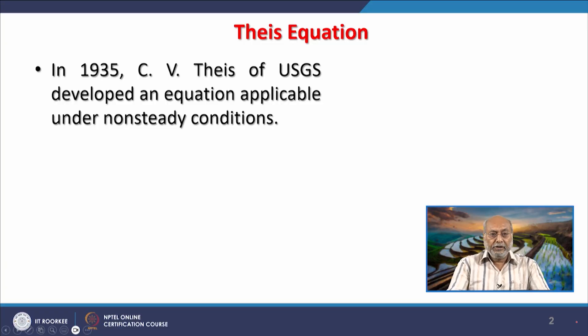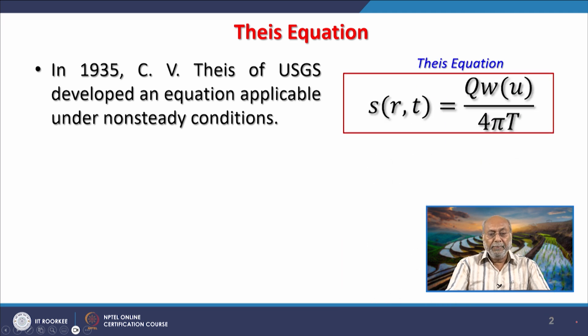As we know, in 1935 the hydrologist C V Theis of USGS developed an equation which is applicable under non-steady conditions. Because getting information in steady conditions is much easier, but getting hydraulic characteristics of an aquifer in non-steady conditions is challenging. Though way back, Theis developed this equation: S(r,t) = Qw(u)/(4πT).